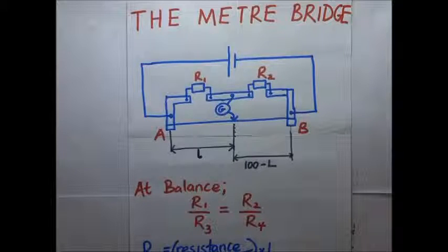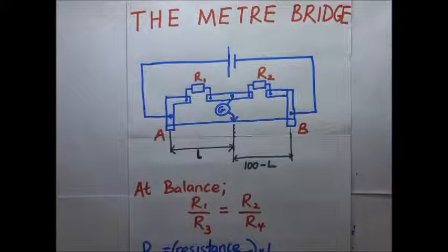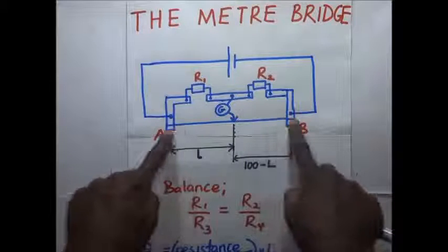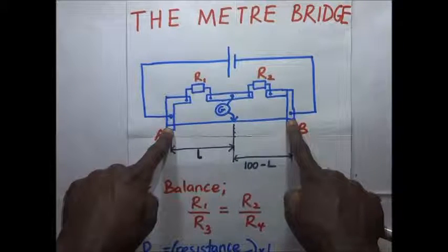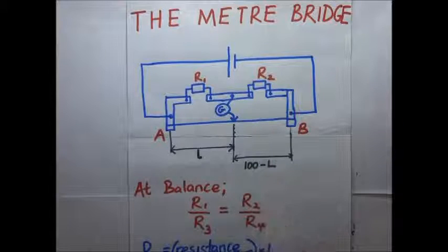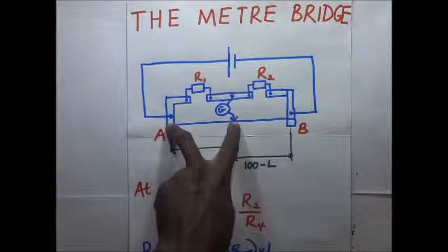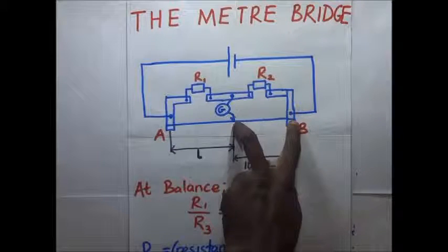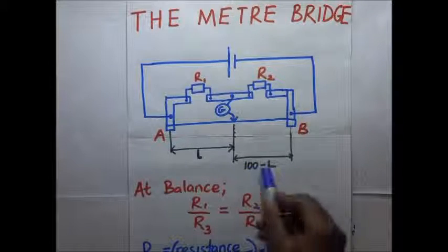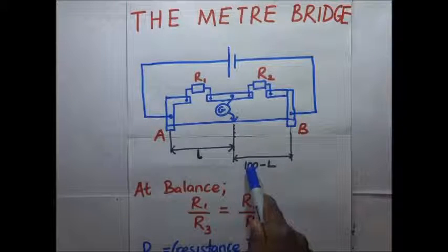It has a resistance wire whose cross-sectional area is uniform. This wire is mounted on a meter rule, and as you can see here, this wire from A to B is one meter long, or 100 centimeters. So if the length of this portion is L, then the length of the remaining portion will be 100 minus L, in centimeters.